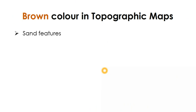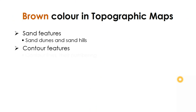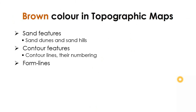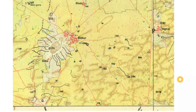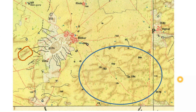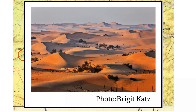Moving on, brown color is mainly used for showing sandy features like sand dunes and sand hills, contour features like contour lines and their numbering, and form lines. These are the three main things shown in brown color in a topographic map. In the southern bottom of the map you can see a number of areas with brown feathery features, and in the northeast as well as central parts of the map you can also see these brown feathery features — they indicate sand dunes.